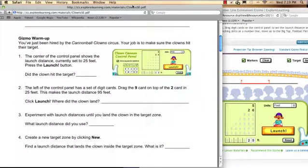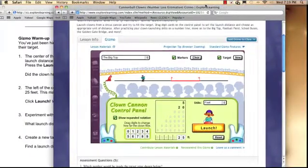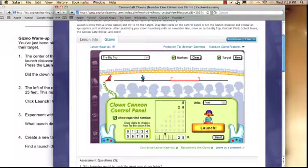Two. The left of the control panel has a set of digit cards. Drag the 9 card on top of the 2 card in 25 feet. This makes the launch distance 95 feet. Click launch. Where did the clown land? So, let's go back to the gizmo. Remember, usually students have a paper copy of this activity sheet. So, grab the 9. Place it where the 2 is. No. Let's try it here. Okay.